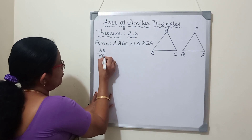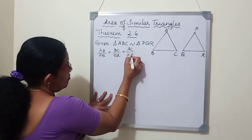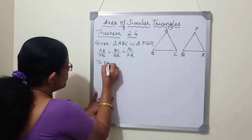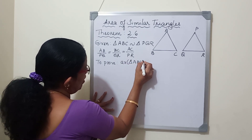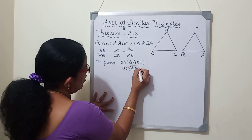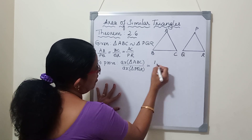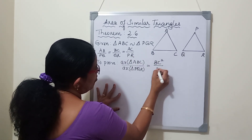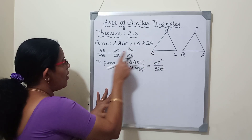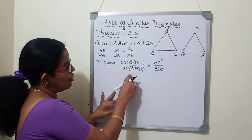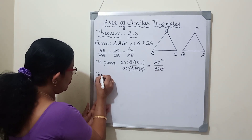AB by PQ is equal to BC by QR is equal to AC by PR. And corresponding angles are also equal. We have to prove that the ratio of the areas of these two similar triangles - area of triangle ABC by area of triangle PQR - is equal to the square of their corresponding sides, BC square by QR square. For this we need to do a small construction.